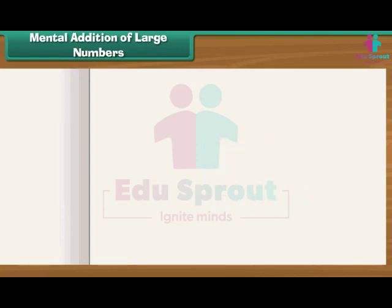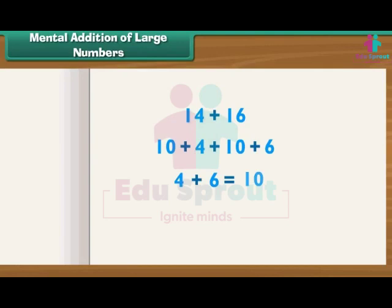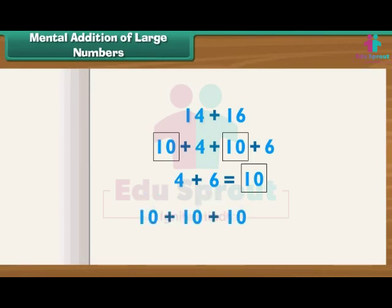Write 14 plus 16 as 10 plus 4 plus 10 plus 6. Now, 4 plus 6 is equal to 10, so we have three tens. Add them: 10 plus 10 plus 10 is equal to 30. So 14 plus 16 is equal to 30.